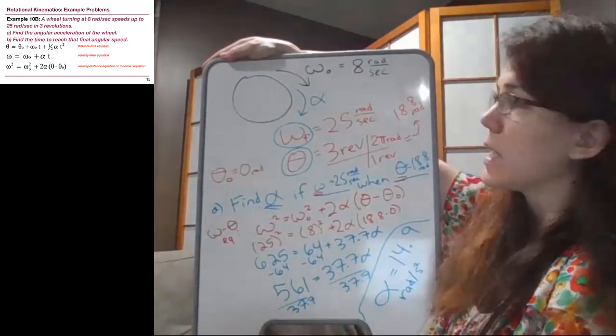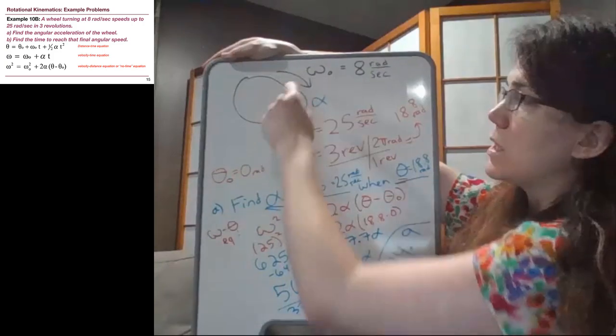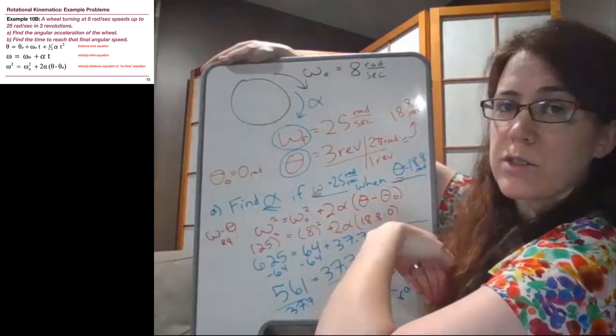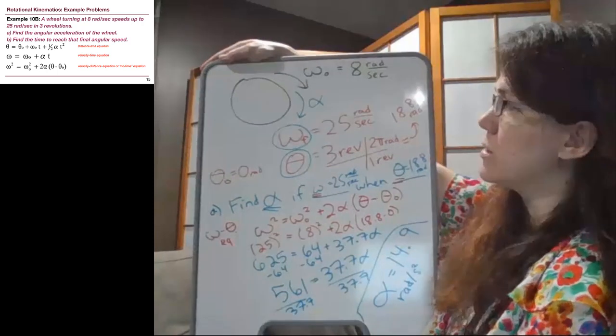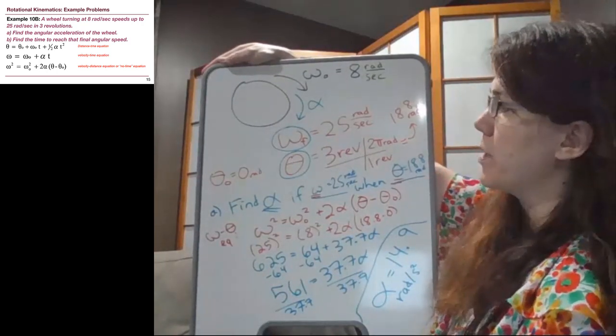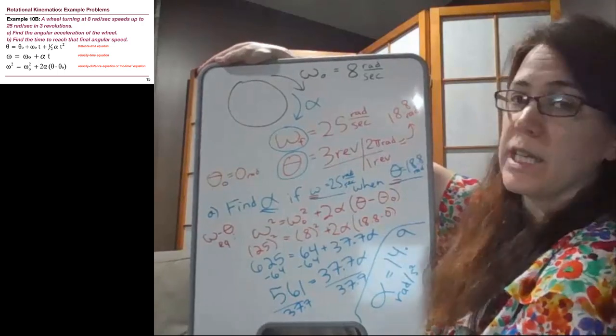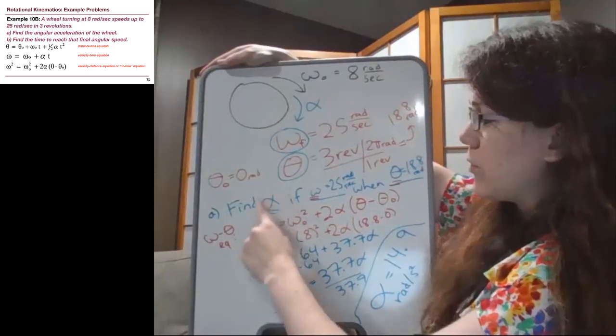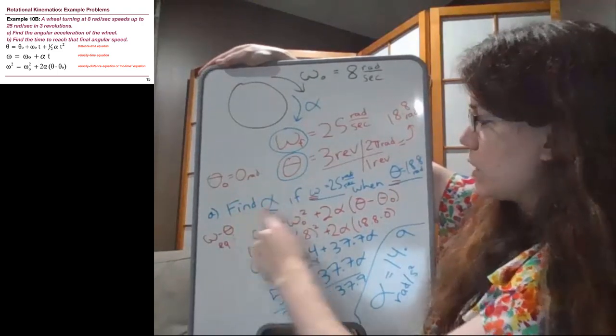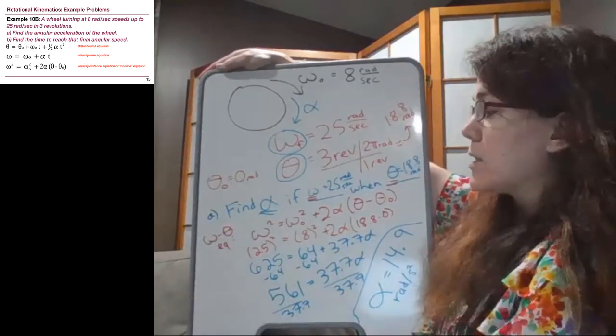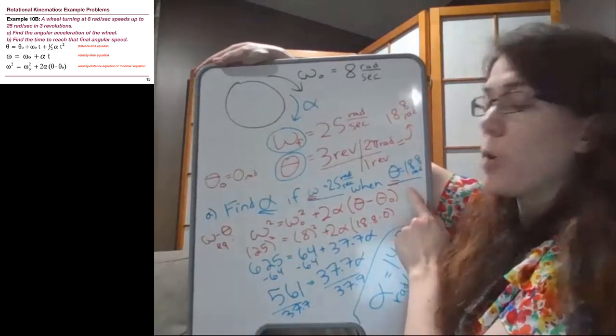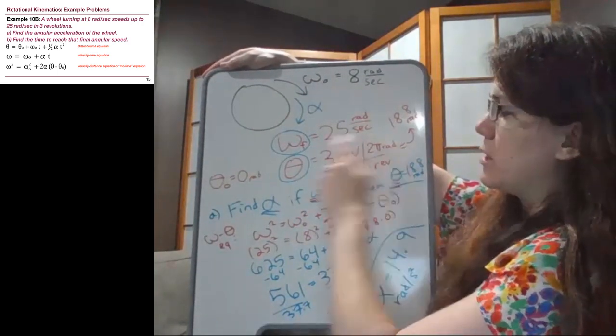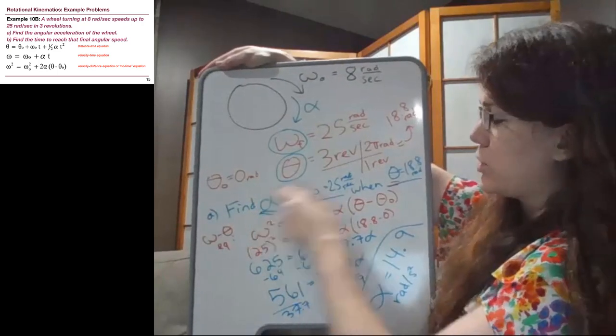To show the flow of the problem one more time: we draw a picture. In this case, the picture is mostly a circle and some arrows, either moving in the same rotational sense or opposite like the previous example. We wrote down the given information and put it into standard units. Then we figured out what we were looking for, which involved rephrasing the question, and that helps us figure out what tool to pick up. Step one: picture. Step two: given information. Step three: rephrase the question.